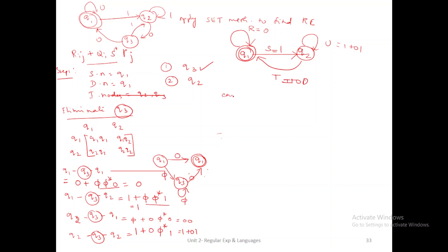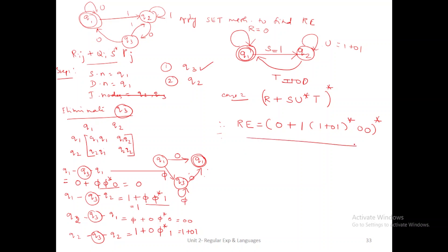Applying the Case 2 concept — when source and destination nodes are the same — the regular expression formula is (R plus S U-star T)-star. Therefore, the predicted regular expression equals (0 plus 1 · (1 plus 01)-star · 00)-star. This is the answer for the given resultant notation.